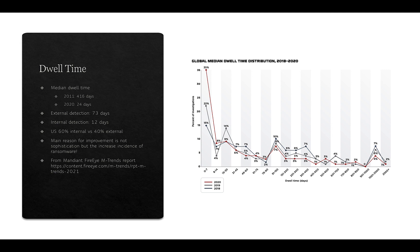The main reason for improvement is not necessarily greater sophistication but the increased incidence of ransomware. We're not necessarily getting better at detecting attacks — the attacks are becoming so obvious that they can't be ignored. This comes from the Mandiant FireEye report in 2021. From their graph, although there is a peak of detection at 0–7 days, there is a long tail stretching out to a very long period. For example, ANU found hackers had been on their network for well over a year before detection, and in some organizations persistent attackers may be a permanent feature of the network.